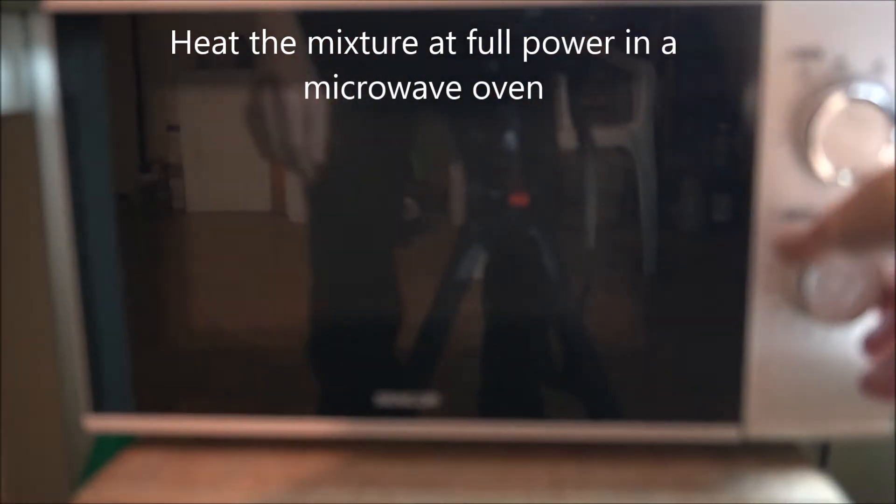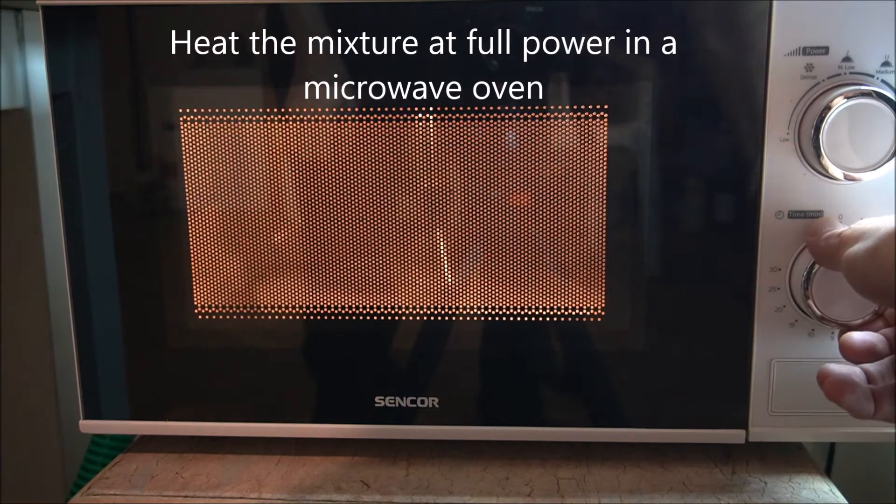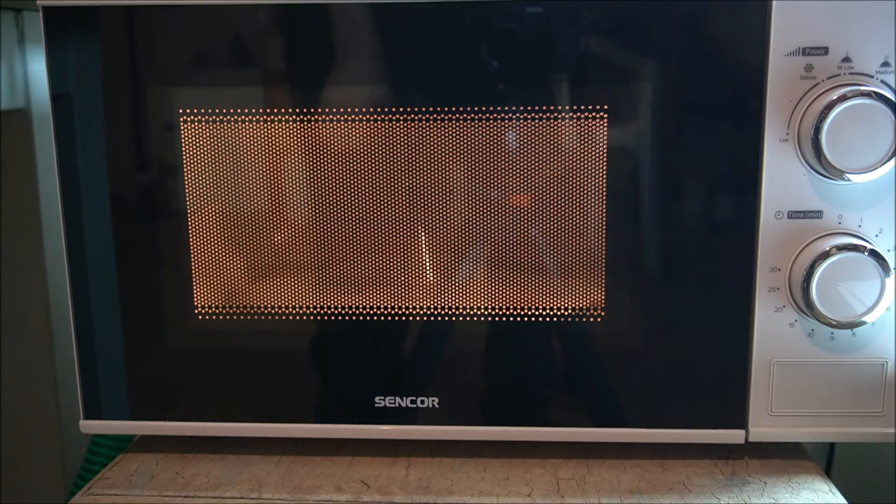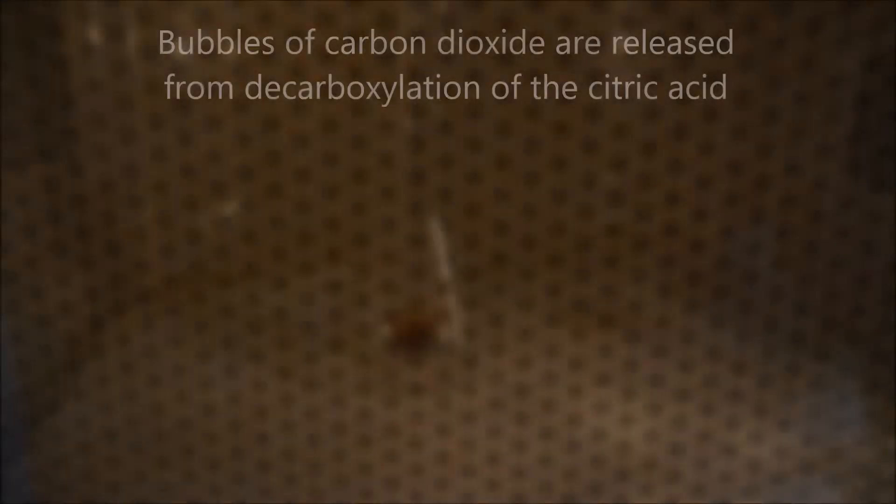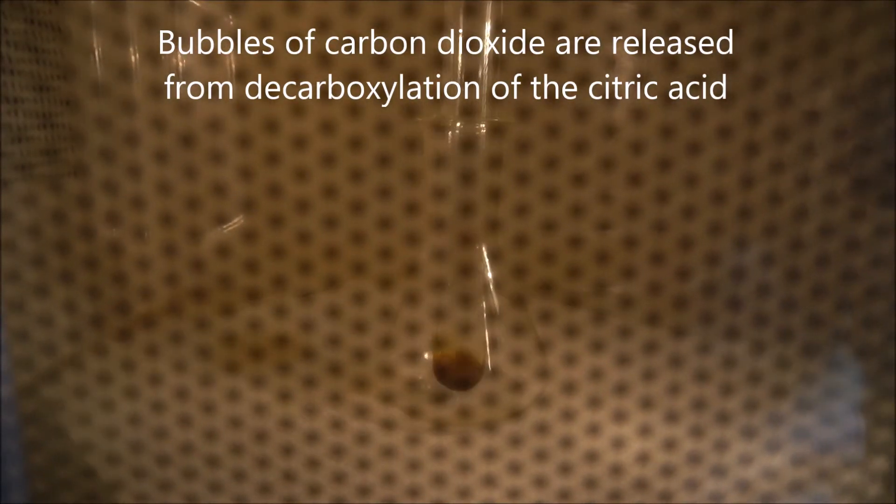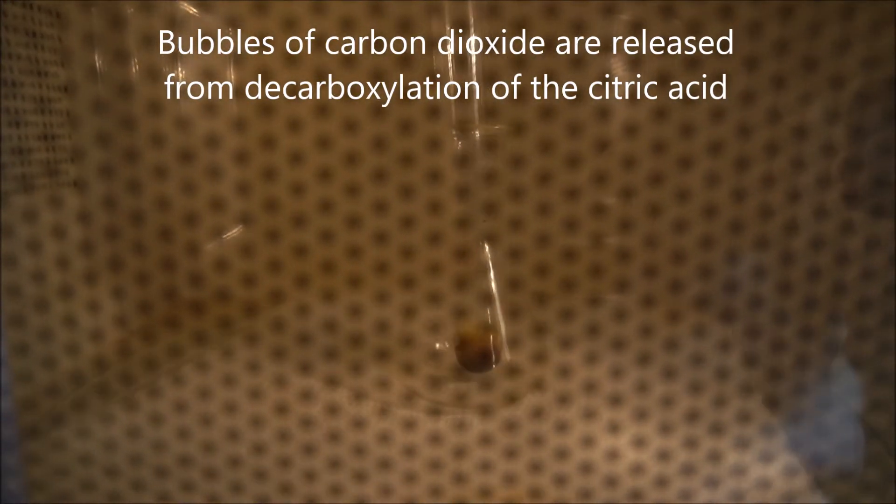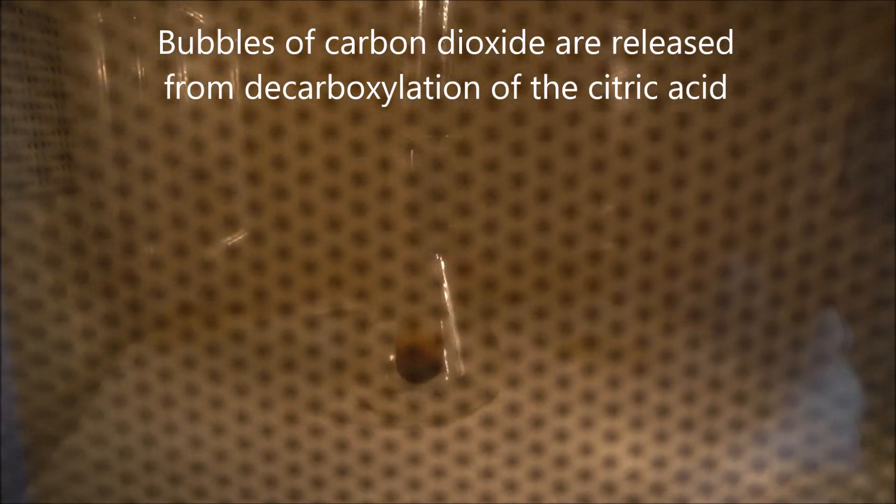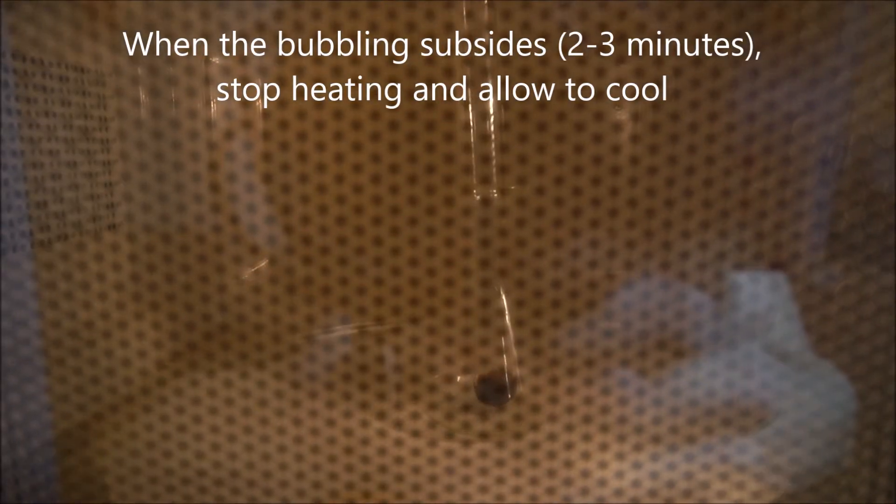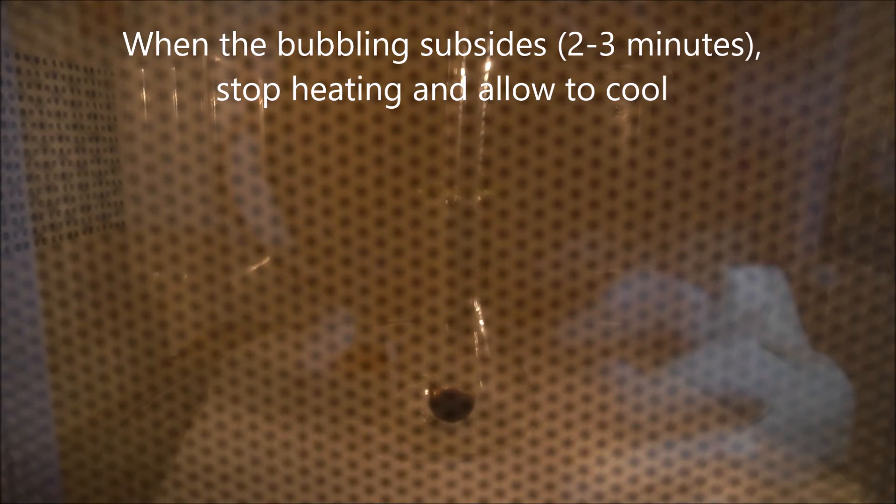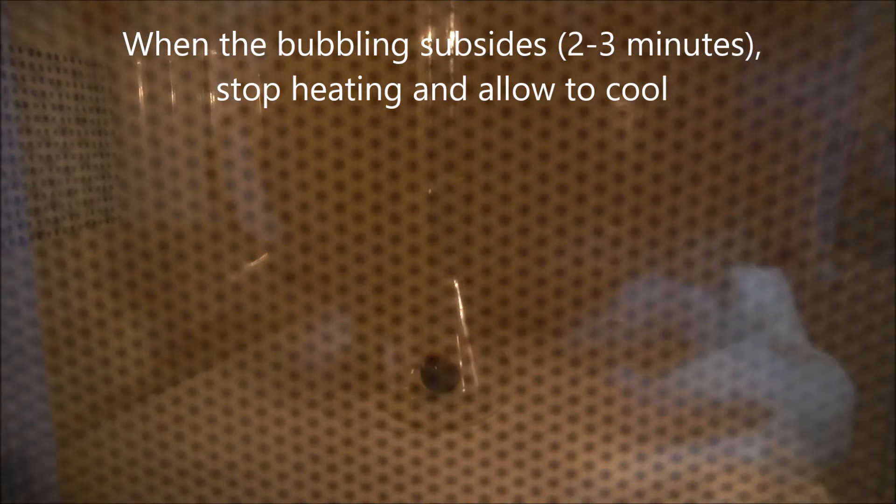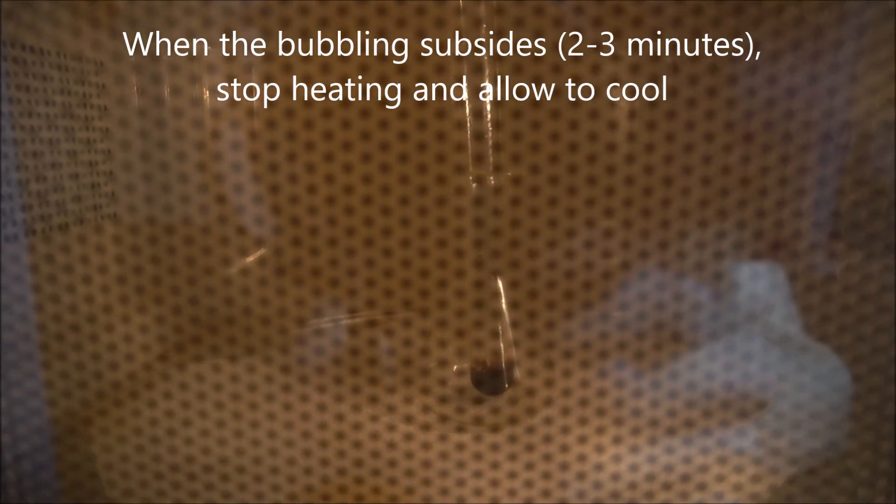Heat the mixture at full power in a household microwave oven. Bubbles of carbon dioxide are caused by decarboxylation of citric acid in the reaction mixture. In about 2-3 minutes, when the gas evolution is essentially over, stop the heating and let the reaction cool down to room temperature.